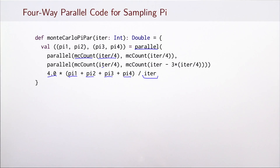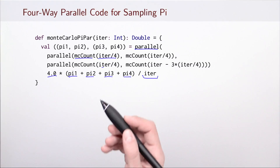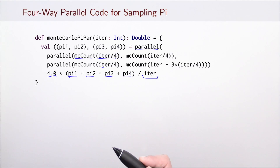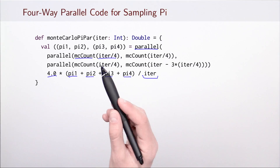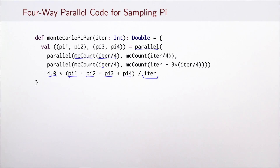This is a nice example because we do not have a shared resource, and also because the amount of work can be easily subdivided into four approximately equal parts. This is because the computation is such that given the value of the parameter, we can easily estimate the amount of work — in this case it is linear in the number of iterations. Unfortunately, not all parallel computations have this property, which means it can be difficult to ensure that different parallel computations are balanced.